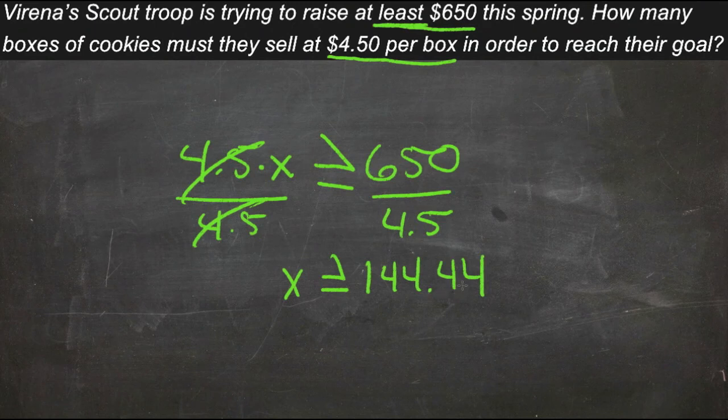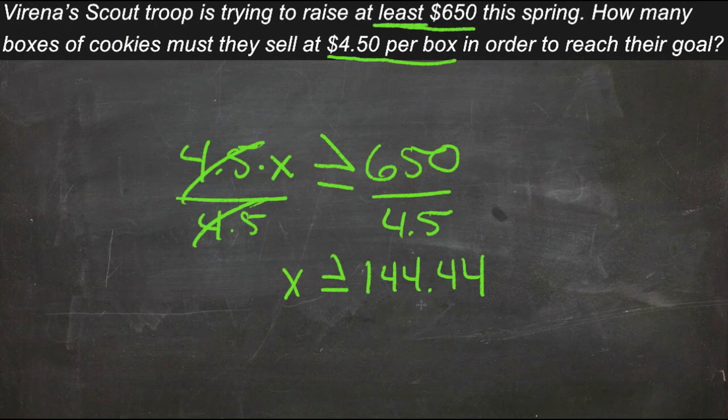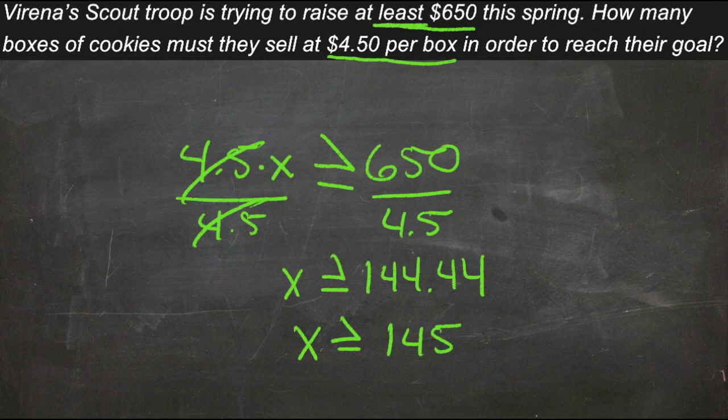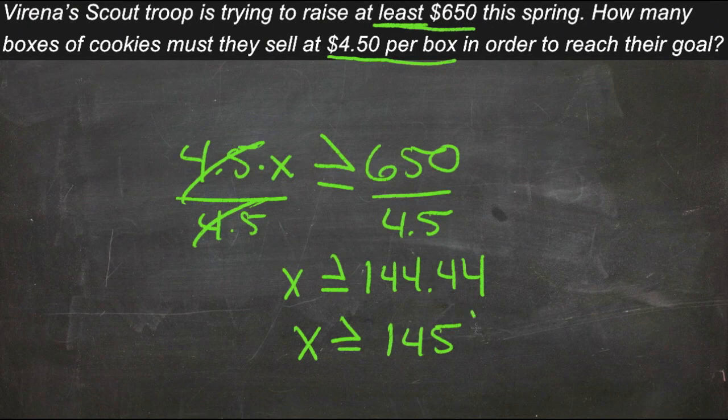But they can't sell four-tenths of a box. So we're going to round that... Actually, you know what, they need to have at least 650, so we do have to round it up. So we need to round up, x greater than or equal to 145. Because even if they sold a little bit less than that one box, they wouldn't actually hit the 650. So we know they need to sell at least 145 boxes.